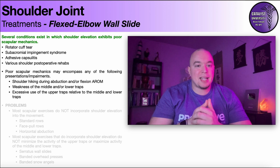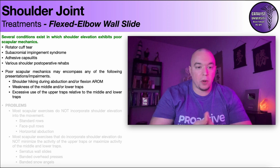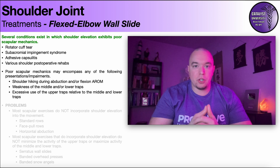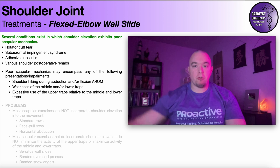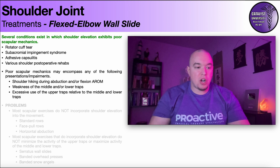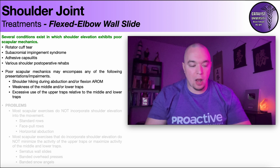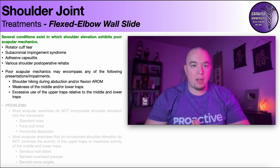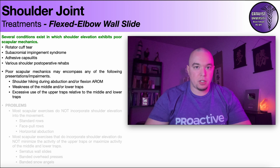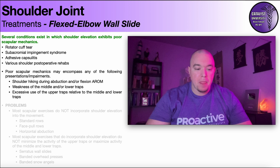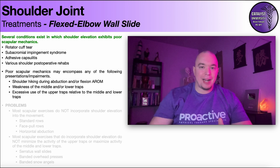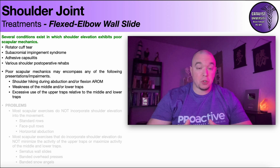Number three: excessive use of the upper traps relative to the middle and lower traps — that implies more of a motor control issue. Maybe they have strength in the middle and lower traps and should theoretically be able to do this movement without compensation, but they're just not aware of how to coordinate those muscles to eliminate that shoulder hike. The vast majority of the time, with the possible exception of impingement syndrome, it's not just a motor control issue in isolation — the muscles themselves are also weak.